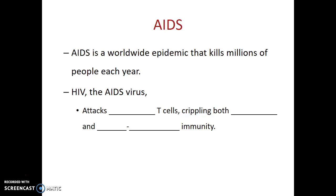AIDS is another condition in which an individual will be immunodeficient. AIDS is a worldwide epidemic that kills millions of people each year. HIV, the virus that causes AIDS, ends up attacking helper T cells. By eliminating those helper T cells, this in turn cripples both the humoral immune response and the cell-mediated immune response.